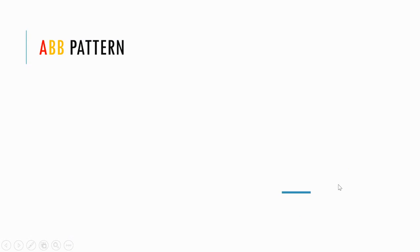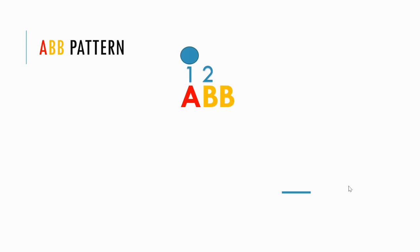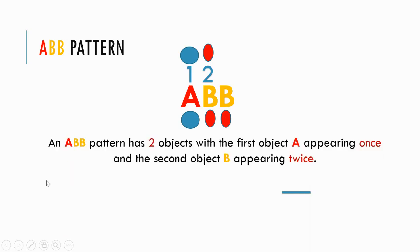So let's look at what an ABB pattern is. An ABB pattern has two objects — the first object being A, and the second object being B. In this case, we have one A and we have two Bs. Our first object can be a circle and our second object can be an oval. So our pattern would therefore be: circle, oval, oval. An ABB pattern has two objects with the first object A appearing once and the second object B appearing twice.